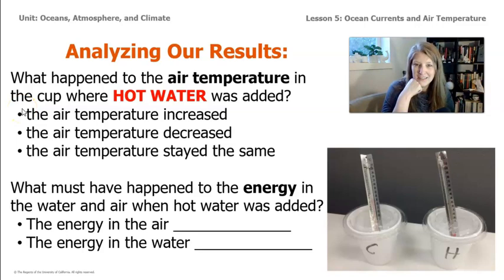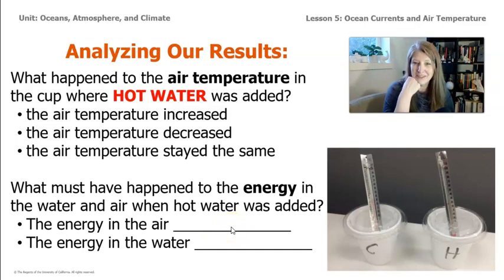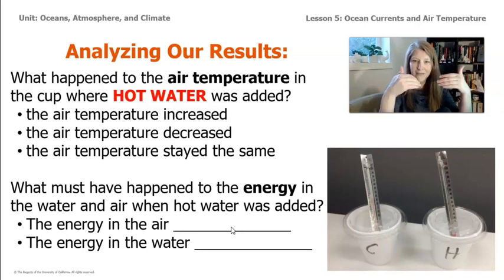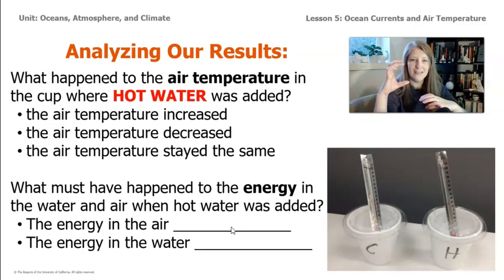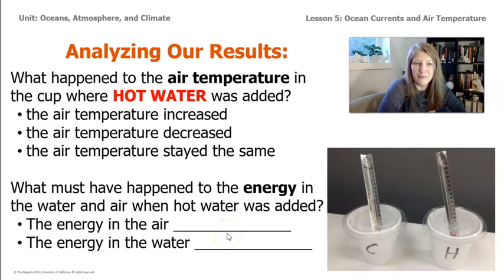What does that mean about the energy? If the temperature goes up, we know the molecules of air are moving faster and have more kinetic energy. The energy in the air increased because the temperature increased. We didn't take the temperature of the water before and after, so we can't say directly if it went up or down. But we know it's a closed system — all the energy has to stay in it; energy doesn't come in from somewhere else or go out. So if the air temperature was increasing, it was getting that kinetic energy from the water. The water was transferring energy to the air, meaning the temperature and energy in the water actually went down.